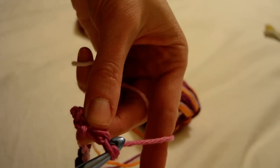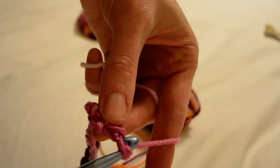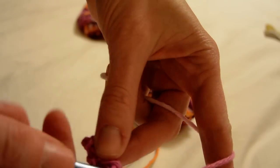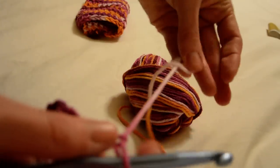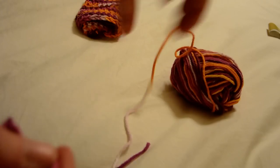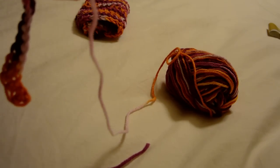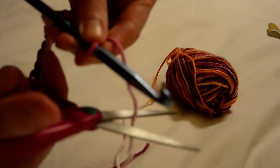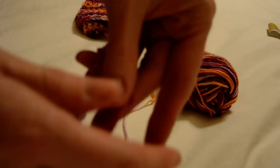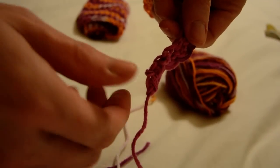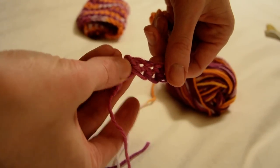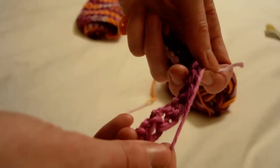So your very last stitch, when you're all done, you're going to act just like you're crocheting. Only you grab the yarn, pull through, and you're going to pull all the way through. That makes a nice knot so that it will all stay together. Then you weave in your ends, and you're done.